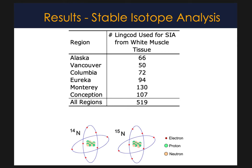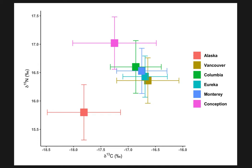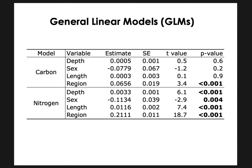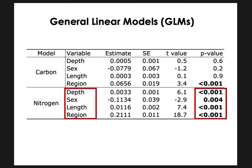Shifting gears now to the stable isotope analysis, we used 519 samples for this part of the study. This is a biplot that demonstrates the relationship between mean values of nitrogen and carbon stable isotopes by region. Most notably, the Alaska region separated from the rest of the regions, and the Conception region to an extent as well, while the middle four regions clustered together.